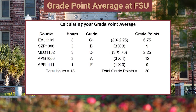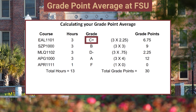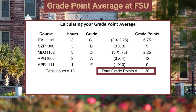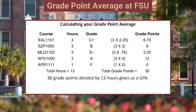With the first course, EAL1101, we see this is a three credit hour course. The student earned a grade of C plus. So we take three multiplied by 2.25, which is the numerical equivalent for a C plus, and we get 6.75. We do that for each graded course, and we get to a total of 30 grade points. We can then take 30 grade points divided by 13 hours, and that will give us a GPA.